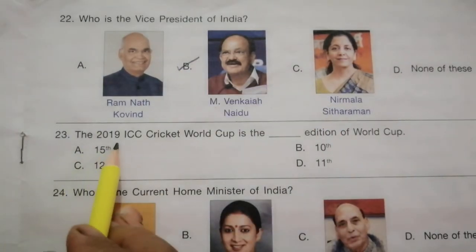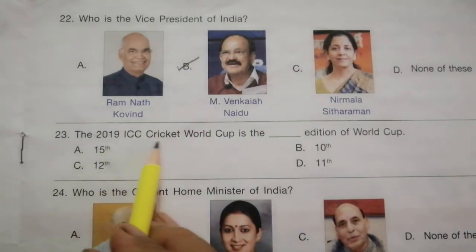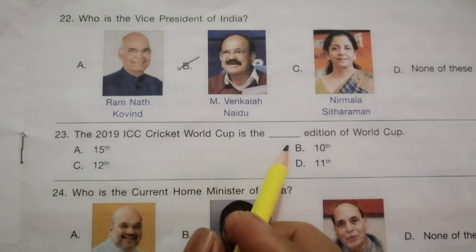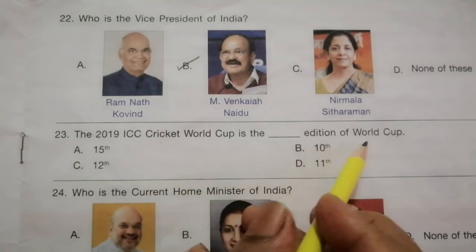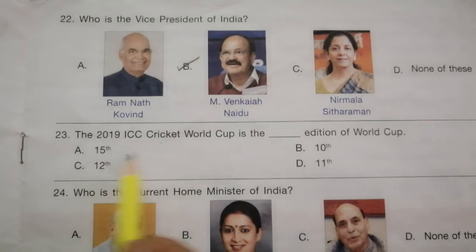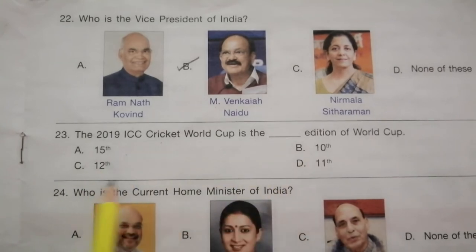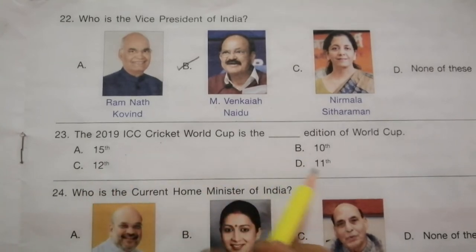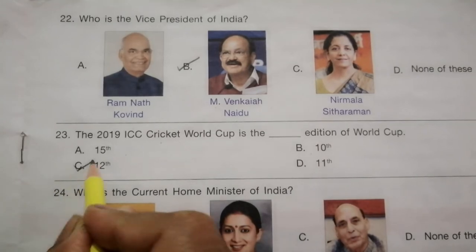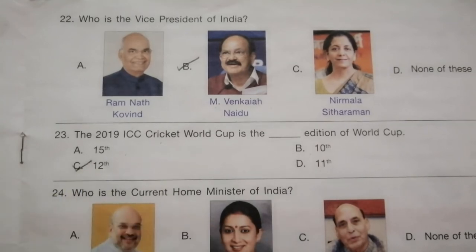Question 23: The 2019 ICC Cricket World Cup is which edition of the World Cup? The options are 15th, 10th, 12th, and 11th. The answer is C, 12th.